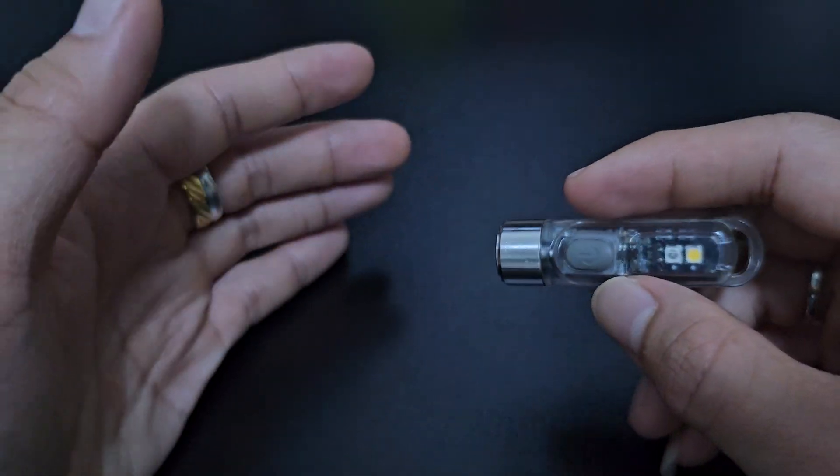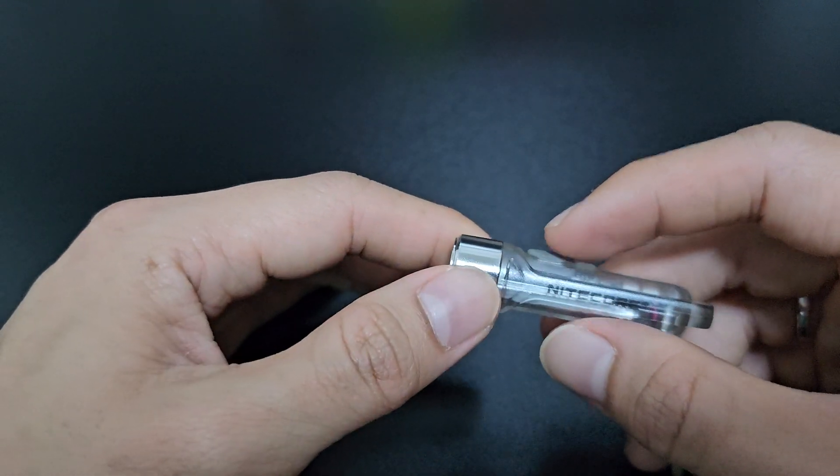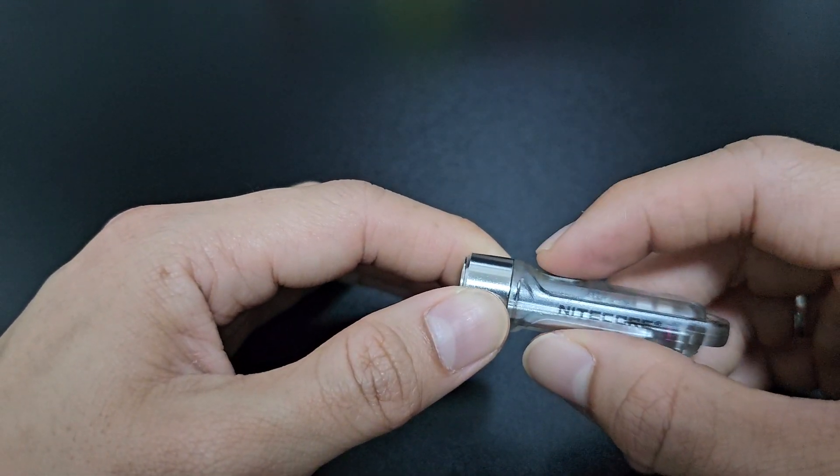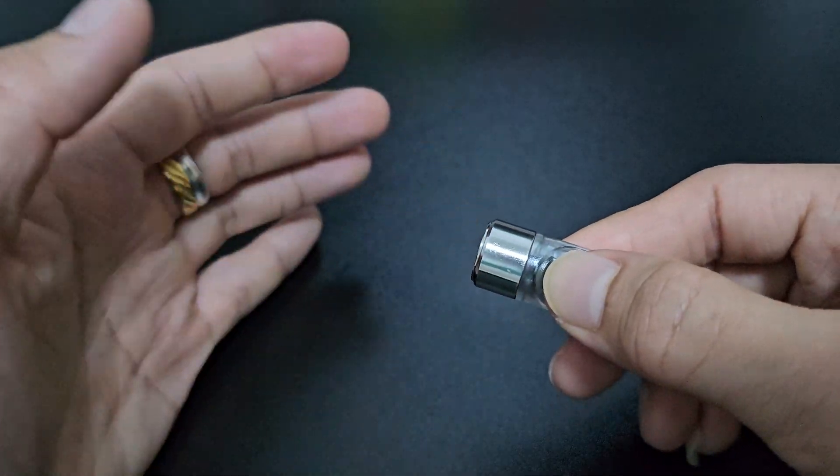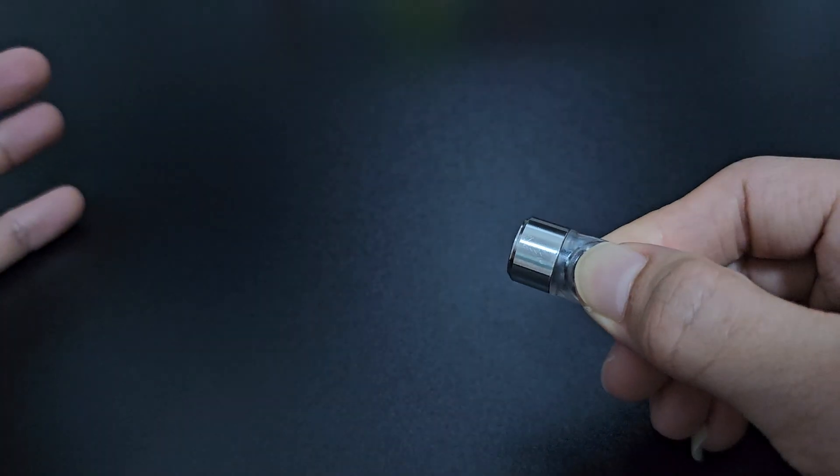You can also access the maximum lumen intensity of this light by holding and pressing the power button like this. So this will give you 300 lumens of illumination immediately.